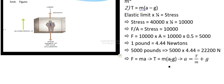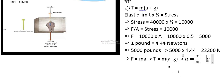Oh, this is plus, sorry. Because the tension has both a and g together, that's why we have the minus. So we have T here, which is about 22,200 newtons.